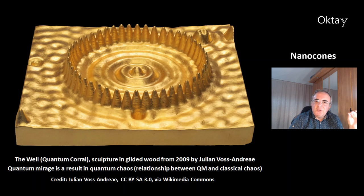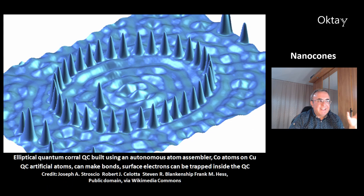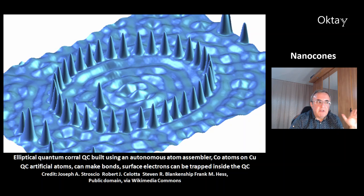This is called the well — it is a quantum corral. This is a sculpture in gilded wood from the year 2009 by Julian Voss-Andreae. Quantum mirage is a result of quantum chaos, which is the relationship between quantum mechanics and classical chaos. This is an elliptical quantum corral built using an autonomous atom assembler — these are cobalt atoms on copper. These quantum corrals are very interesting because they are artificial atoms with atom-like properties; for example, they can make bonds, and surface electrons can be trapped inside the quantum corral.